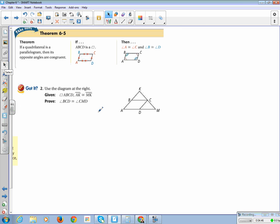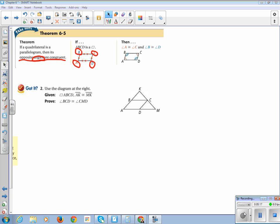That brings us to our next theorem that opposite angles are congruent. Opposite sides are also congruent, but in this case, opposite angles are congruent. Angle A is congruent to angle C, and angle D is congruent to angle B. I like this because it looks the way you think it's supposed to look.